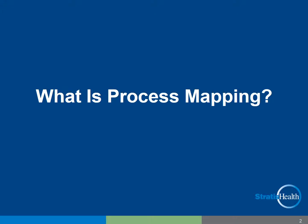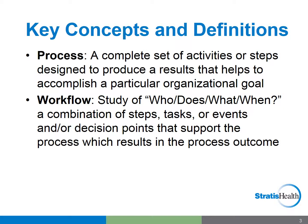What is process mapping? To start off, we'll need a few working definitions before we dive into the detail of process mapping. First, what is a process? Generally, it is a complete set of activities or steps designed to produce a result that helps to accomplish a particular organizational goal. Additionally, a process is a set of tasks that are sequenced together which have a logical beginning — something that triggers the process to start — and an endpoint, which is the output or result of the process.